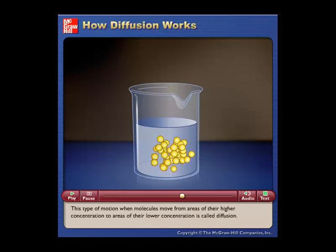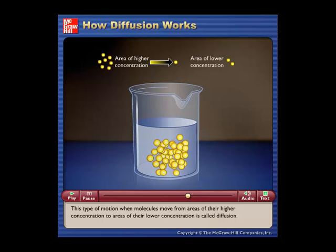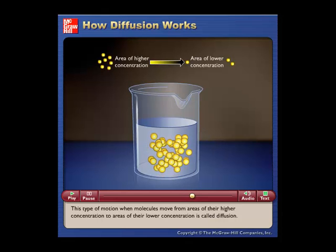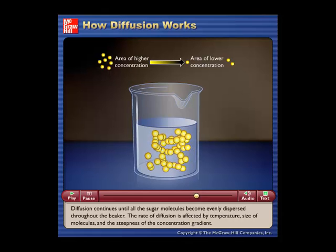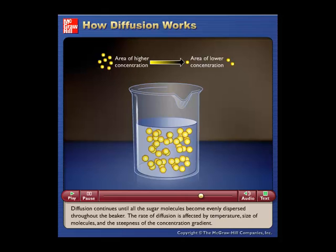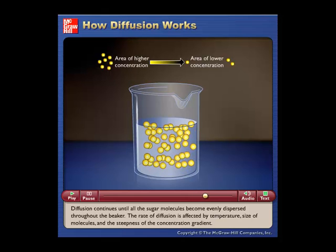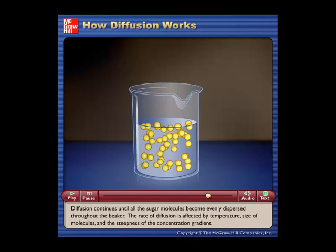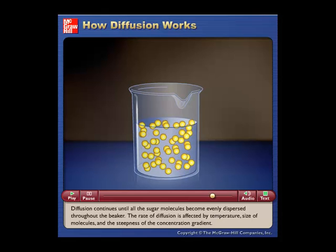This type of motion, when molecules move from areas of their higher concentration to areas of their lower concentration, is called diffusion. Diffusion continues until all the sugar molecules become evenly dispersed throughout the beaker. The rate of diffusion is affected by temperature, size of molecules, and the steepness of the concentration gradient.